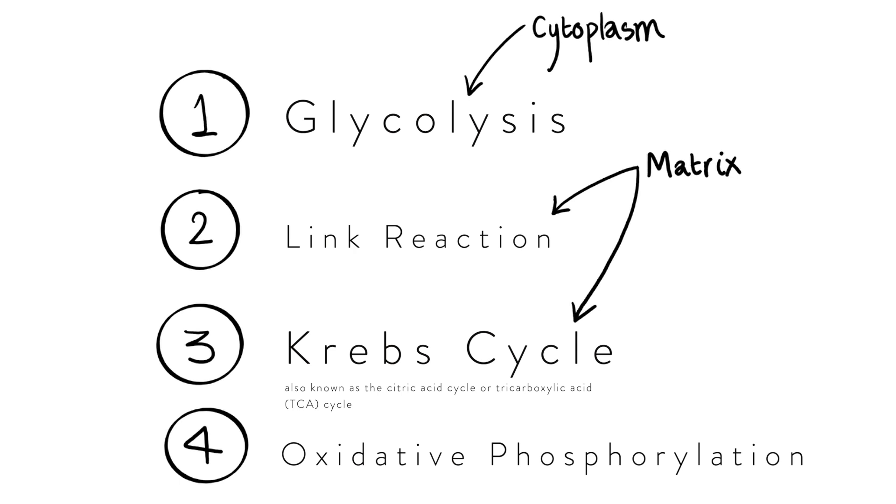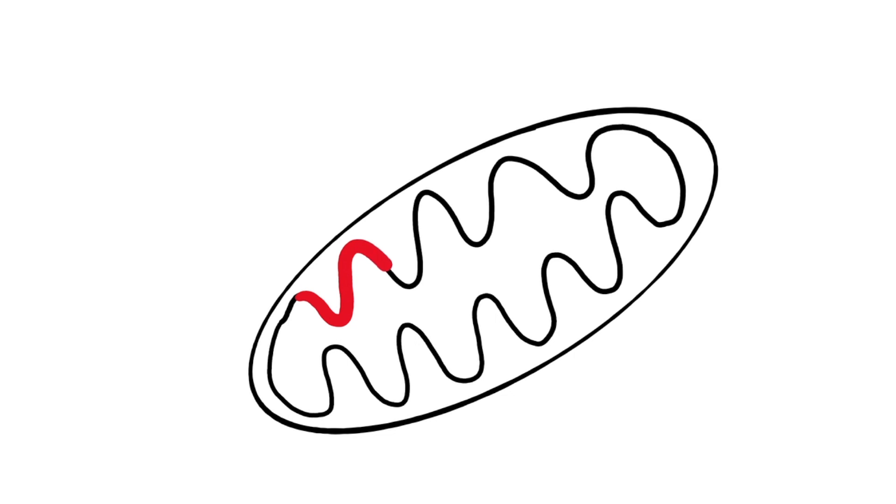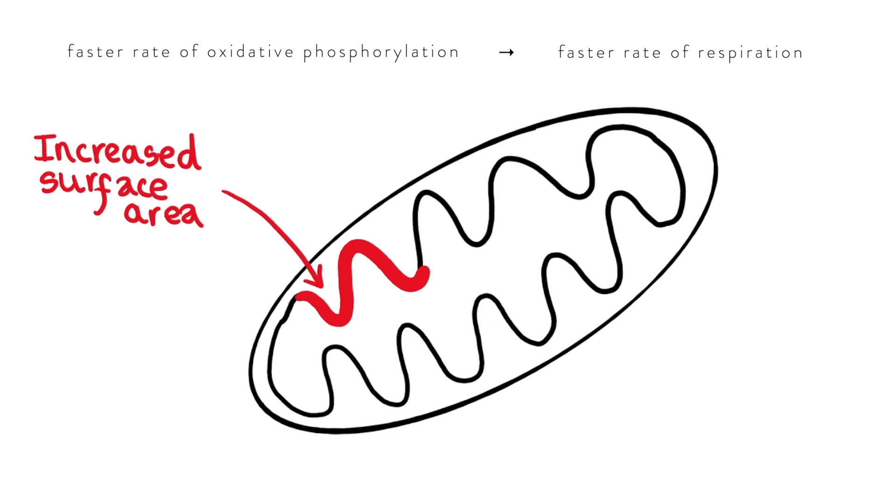This is probably the most complicated step however it's really important because in aerobic respiration so respiration that uses oxygen it is where the majority of energy or ATP is made and it takes place on the inner membrane so it takes advantage of the cristae because the cristae are those infoldings of the inner mitochondrial membrane and those infoldings increase the surface area of the mitochondrial inner membrane so it means that oxidative phosphorylation can take place at a faster rate and so respiration overall can be more efficient.